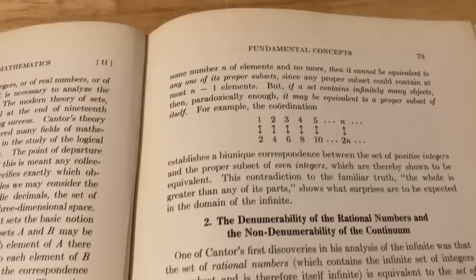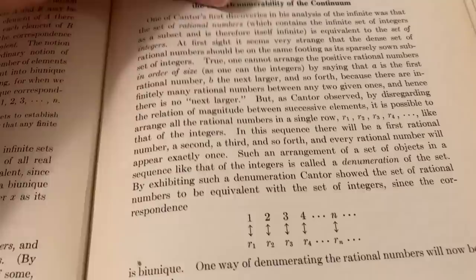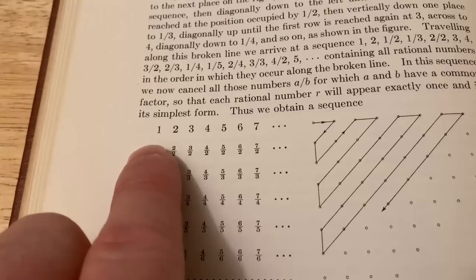Now for rational numbers, it's not so simple. You can do the same thing though with rational numbers. And I think the best way to illustrate that is with this diagram here. So basically you list the numbers, all the integers: one, two, three, four, five, six, seven.